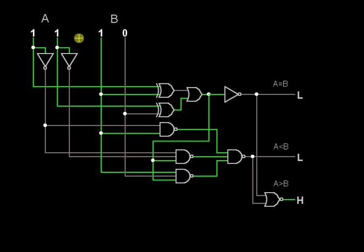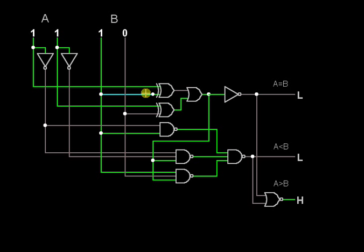We are comparing the values of A and B — which is greater, which is equal, or which is less — with the help of this circuit. How this circuit finds whether A is greater, or B is greater, or they are equal, we will now check how this circuit determines whether A is greater than, equal to, or less than B.